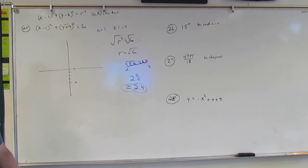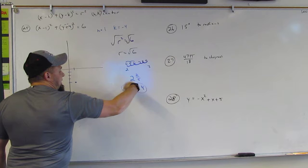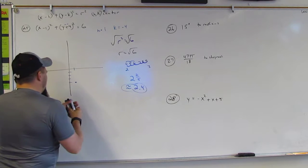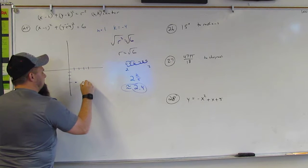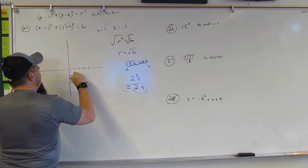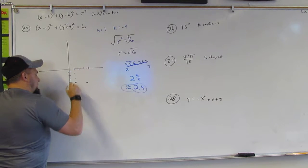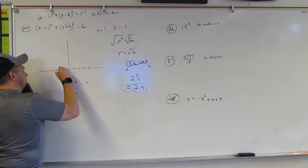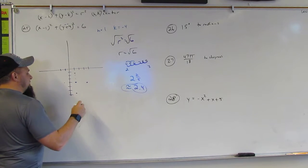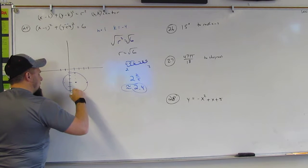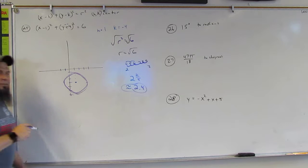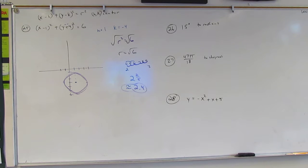So it's about two and a half. Starting from the center, I go right about two and a half, up two and a half, down two and a half, and left two and a half, then connect those points to make the circle.